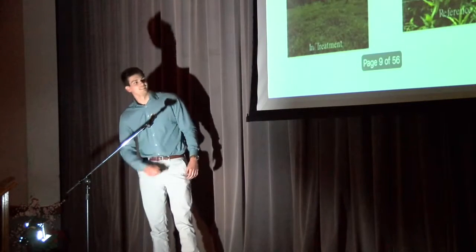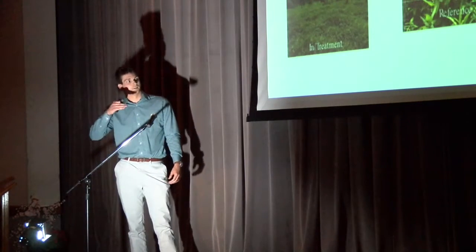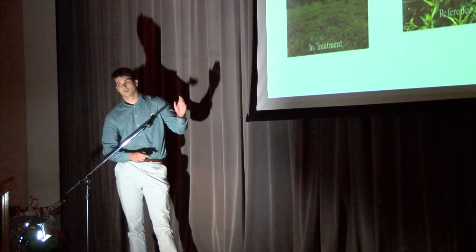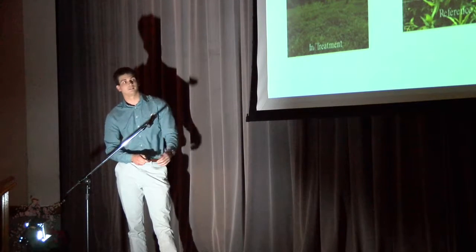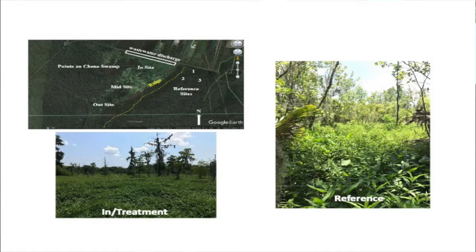Here we can see the wetland that receives the highest level of influence from the wastewater. Conveniently enough, we have this yellow line right here — it's a natural ridge system separating the treatment wetland so that we have a reference wetland where we can look at what a wetland in that area would appear like if it wasn't receiving wastewater.